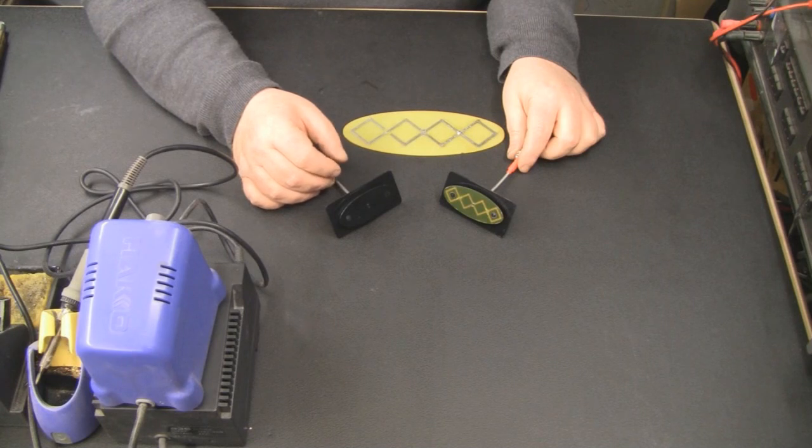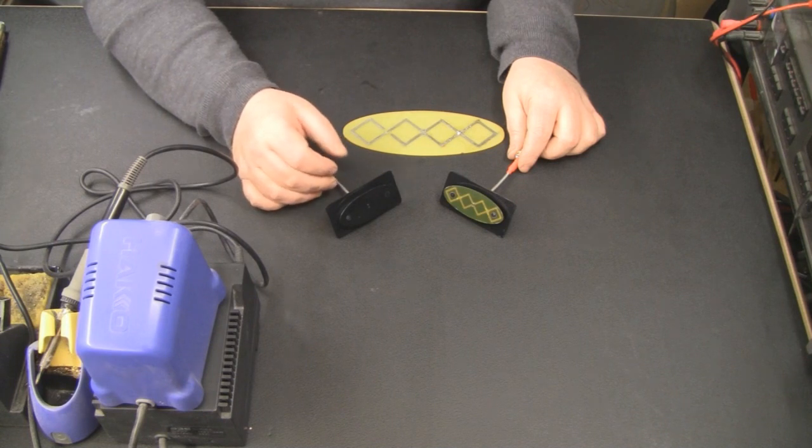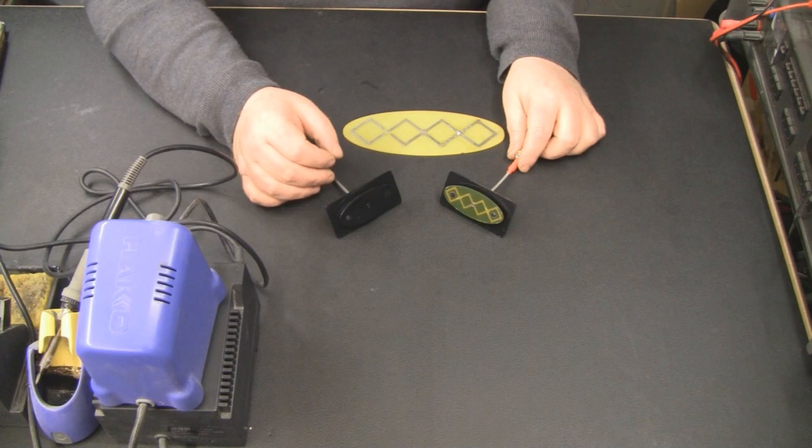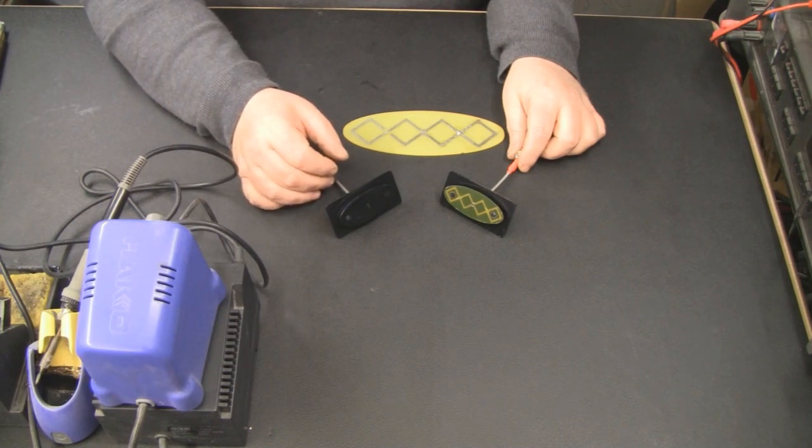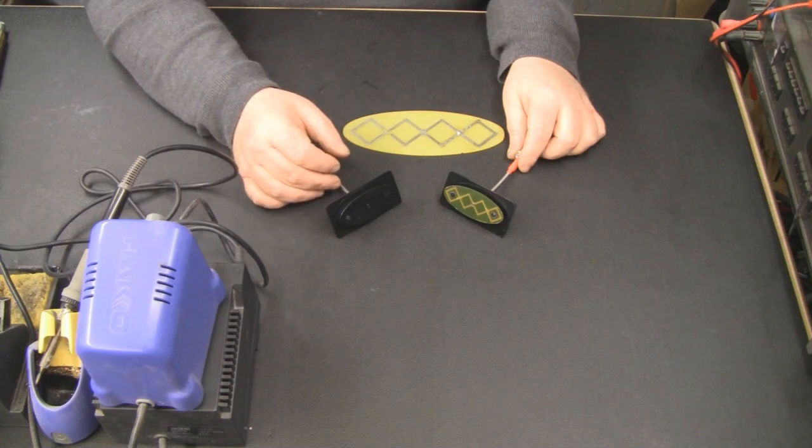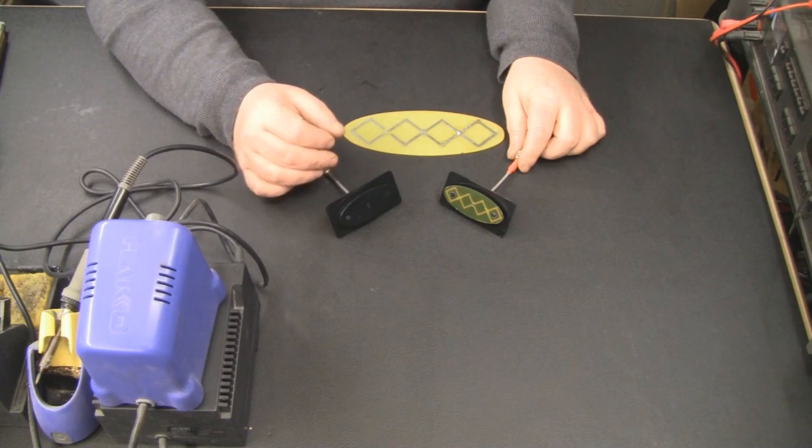In this video I'm going to show you how to build a double bi-quad for 5.8 gigahertz FPV. Somebody asked me about this and I was under the impression that I'd already done a video on constructing a wire version for 5.8 gigahertz, but when I actually went back and had a look I've only done the 5 gigahertz for Wi-Fi.